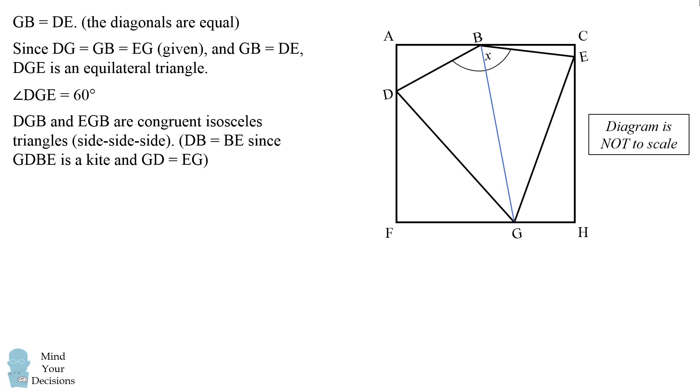Next, DGB and EGB are congruent isosceles triangles by side, side, side. The sides DG, GB and EG are all equal to each other, and the remaining sides are equal. DB is equal to BE because GDBE is a kite and GD is equal to EG. So the remaining two sides will be equal to each other.